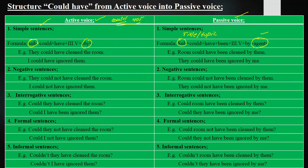The formula in active voice is: Subject + could have + past participle (3rd form) + object. In passive voice: Subject + could have been + past participle + by agent. For example: 'They could have cleaned the room' becomes 'The room could have been cleaned by them.' Also, 'I could have ignored them' becomes 'They could have been ignored by me.'